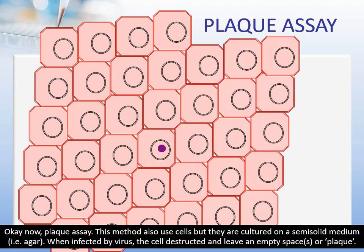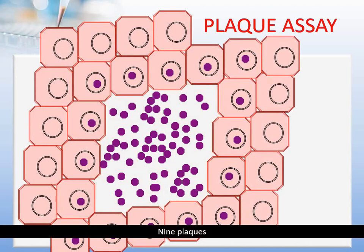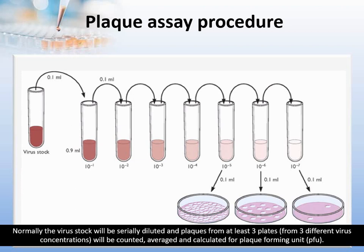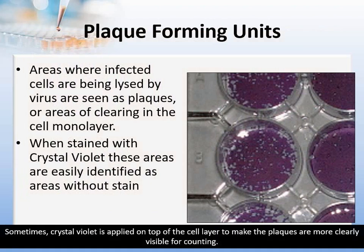This method also uses cells but they are cultured on a semi-solid medium like agar. When affected by virus, the cell is lysed and leaves an empty space or plaque. The virus stock will be serially diluted and plaques from at least three plates from three different virus concentrations will be counted, averaged, and calculated for a plaque forming unit or PFU. Sometimes crystal violet is applied on top of the cell layer to make the plaques more clearly visible for counting.